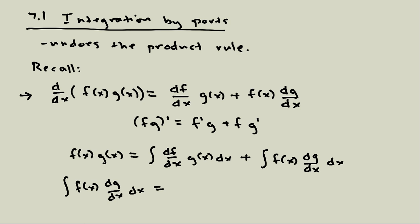So when I do that, I'm going to get the integral of f of x times dg by dx dx equals f of x g of x, and then minus the integral of df by dx times g of x dx.